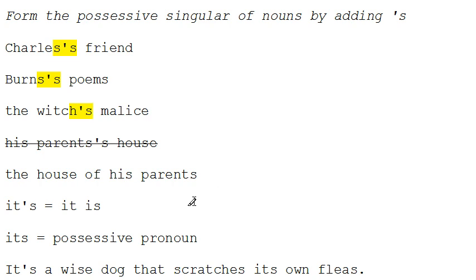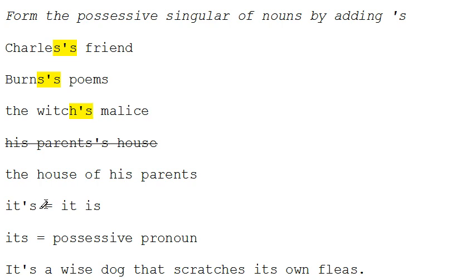Now there are also rules of usage which force us to recognize the rules of grammar. One rule of usage is the way that we form contractions. We can take two words such as it is or do not and change that to it's and don't. In other words, we're using the apostrophe to form a contraction.